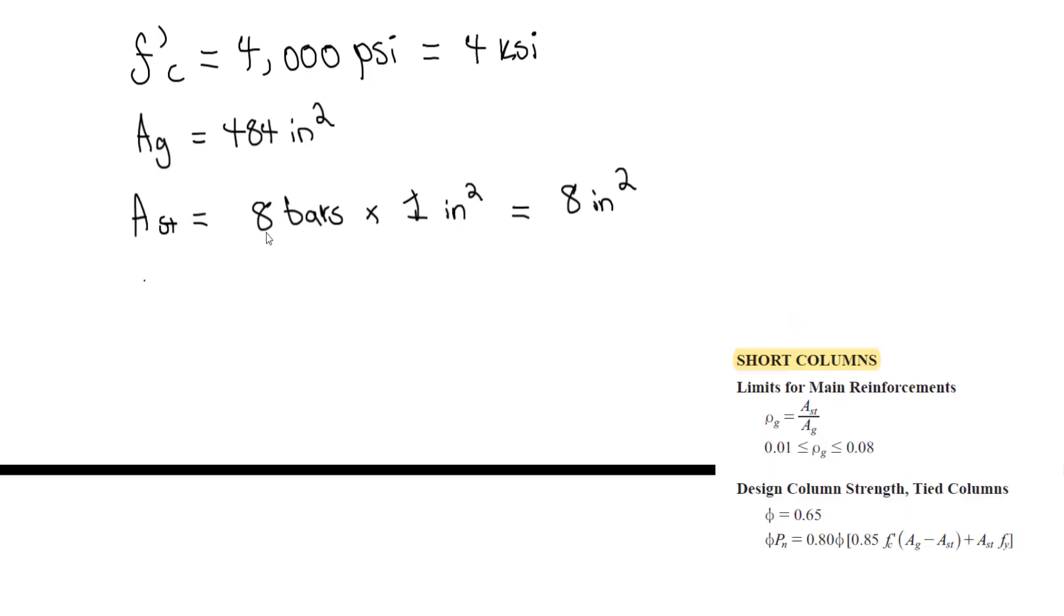Lastly, F sub y is 60,000 psi for steel. Converting to ksi by dividing by 1,000, we get 60 ksi.